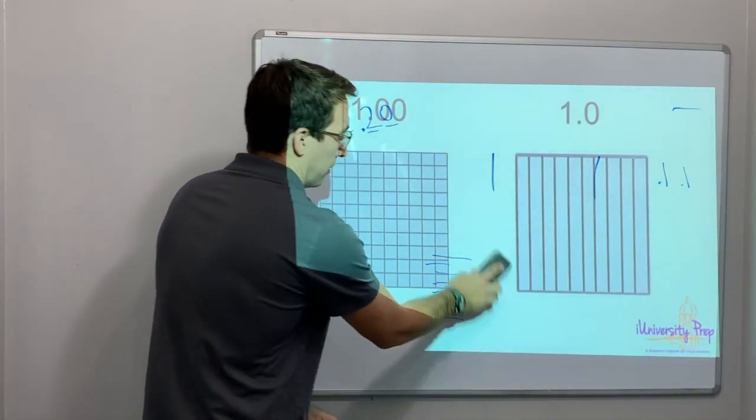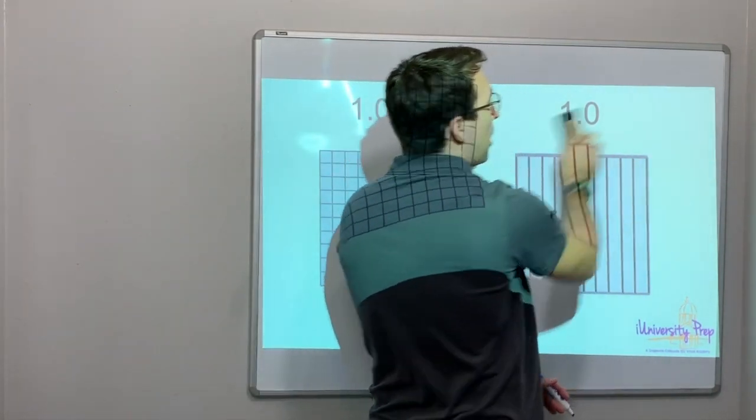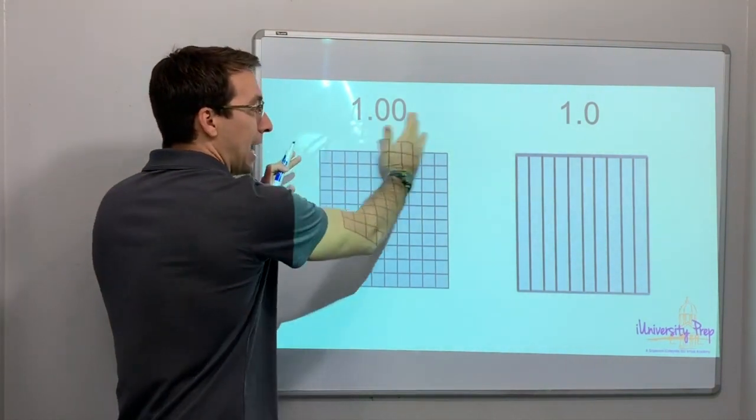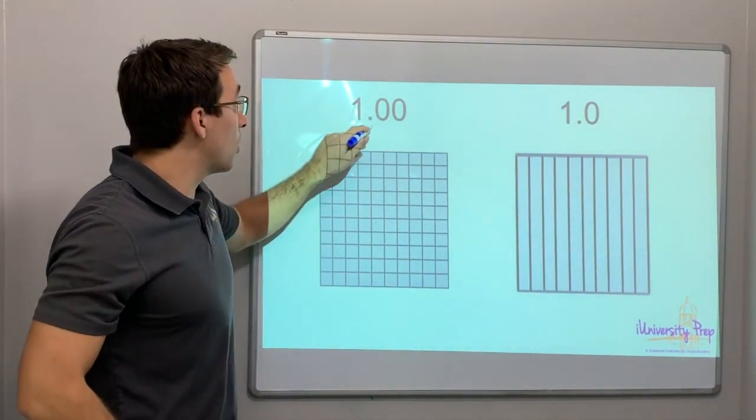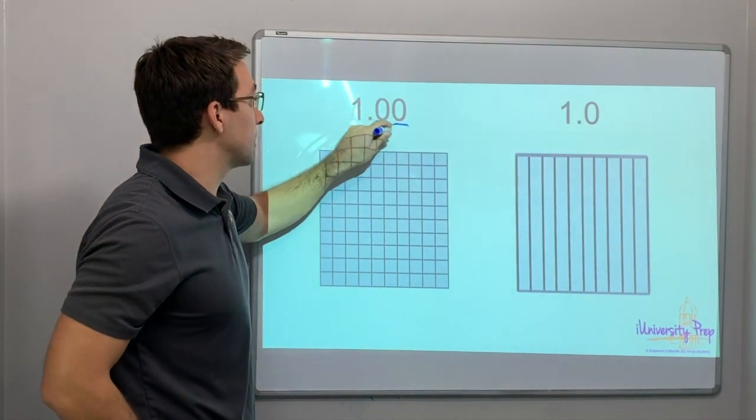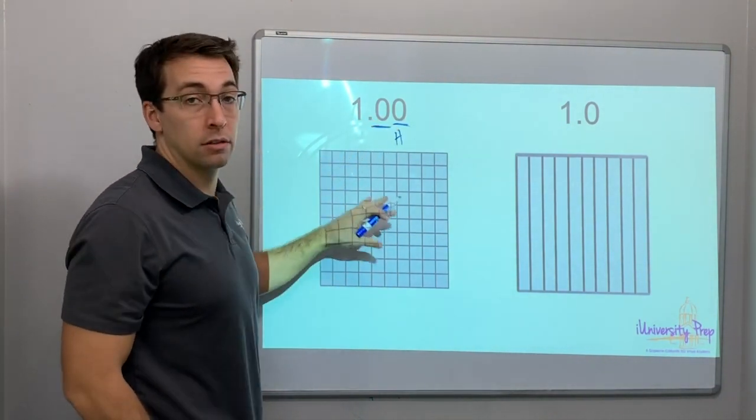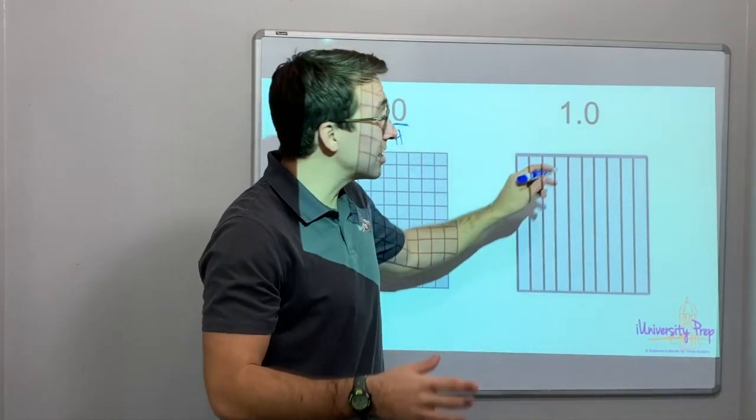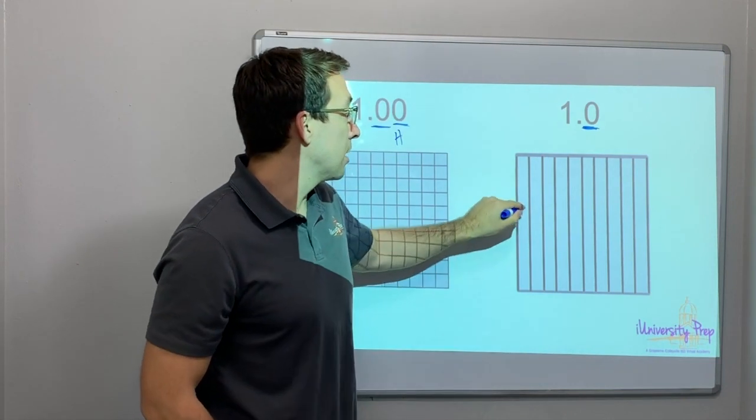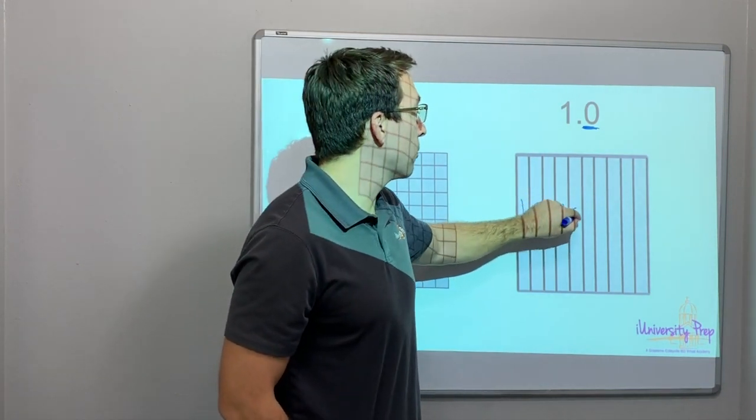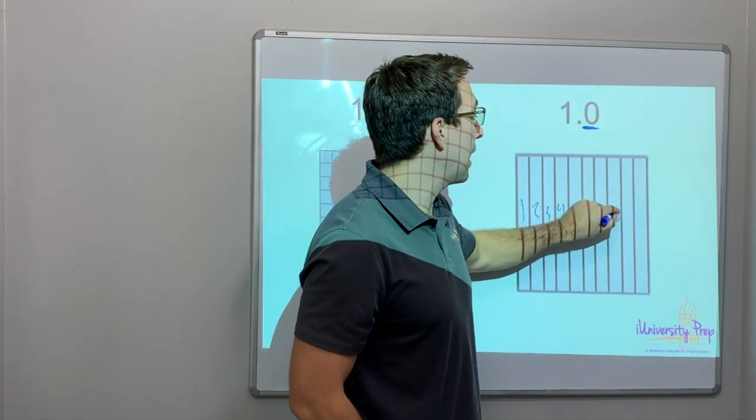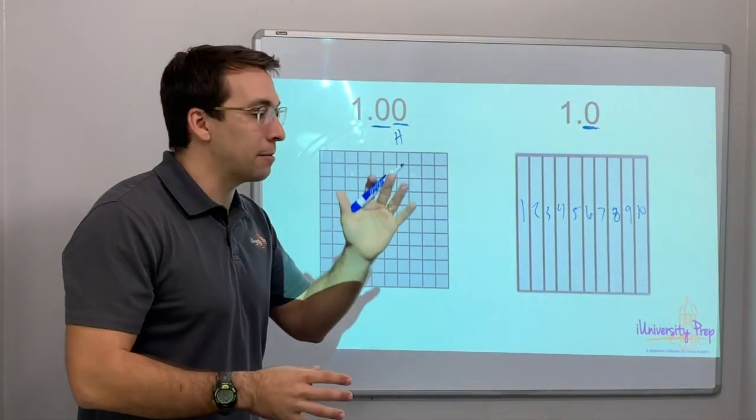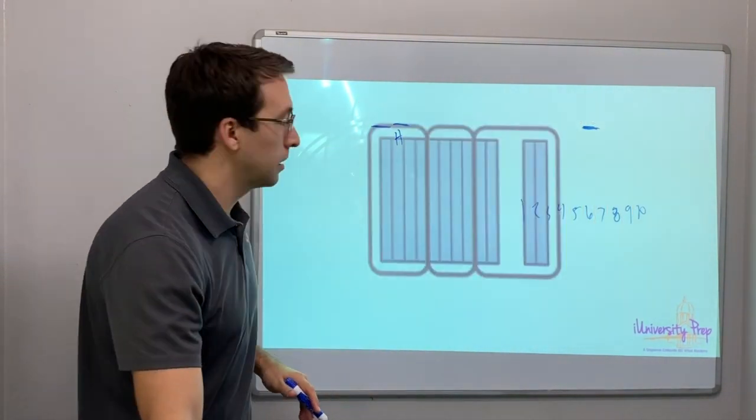I mentioned this earlier, but anytime you see a graph or a model, an area model, the entire thing if it's shaded is one. This is one, and it deals with the hundredths place because there's a hundred squares. This is one. It's a whole thing shaded, and it deals with tenths because there's 1, 2, 3, 4, 5, 6, 7, 8, 9, 10. One is one. It doesn't matter if you divide it by ten or if you divide it by a hundred.